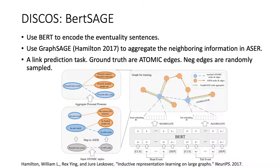Then we propose BirdSage, a link prediction model that uses BERT to encode eventualities and GraphSage to aggregate the neighboring information in the Acer graph. The figure below is an overview of our framework. We first align Acer and Atomic, and use the Atomic edges as ground truth edges to train the link prediction model using BirdSage.